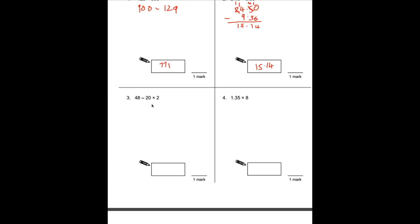So we'll do this bubble here: 20 times 2 is 40. So our sum is 48 subtract 40, which should be relatively straightforward to do in your head. The answer is 8.